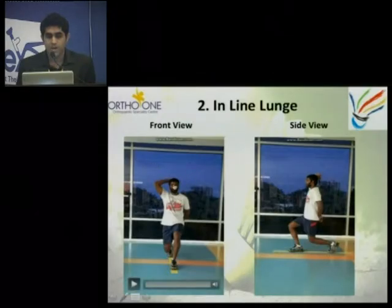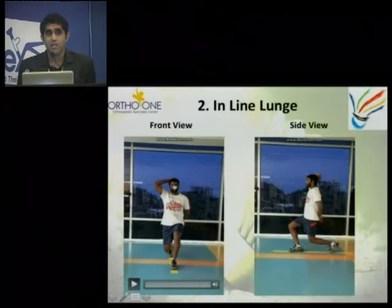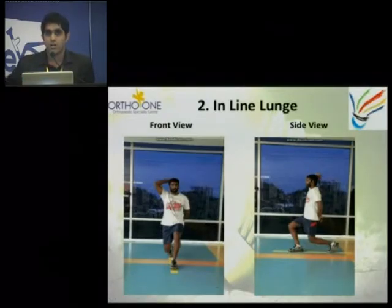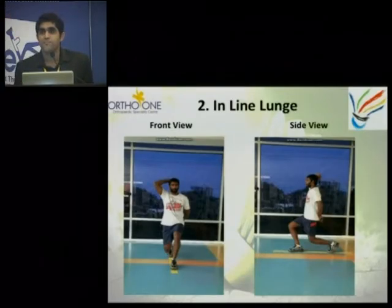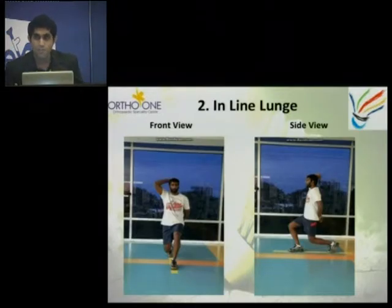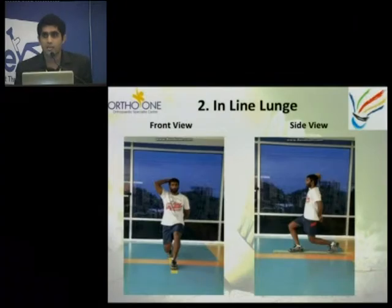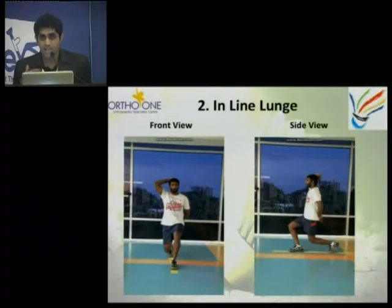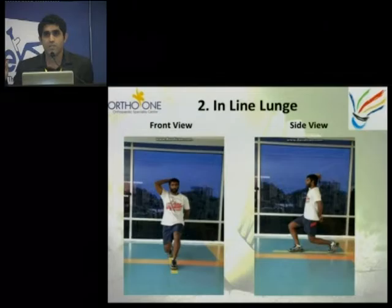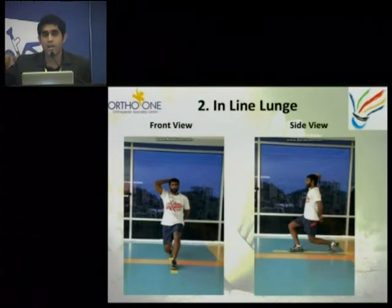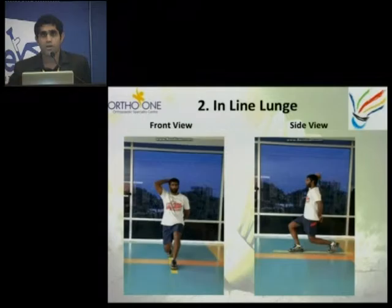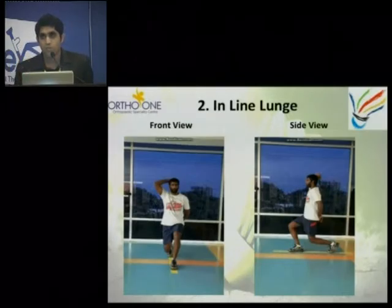Next, lunges. As I have seen on a lot of courts, a lot of players never do a proper lunge — they just run around. Elite players, as we can see in videos and pictures, do a proper lunge. But recreational players don't do many lunges; they try to run around the court and go for the ball, which is not at all good for your performance.